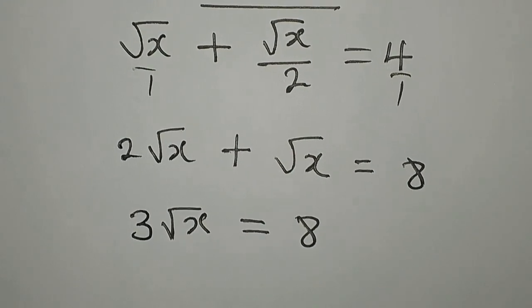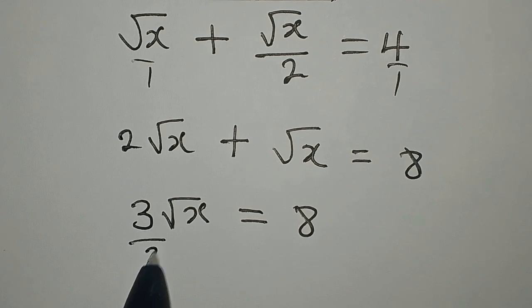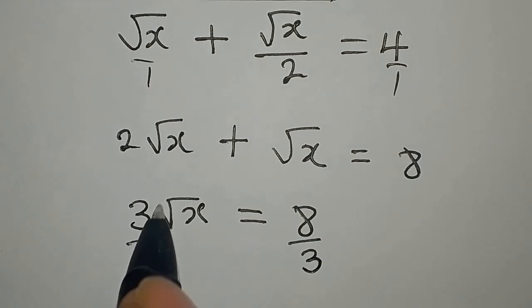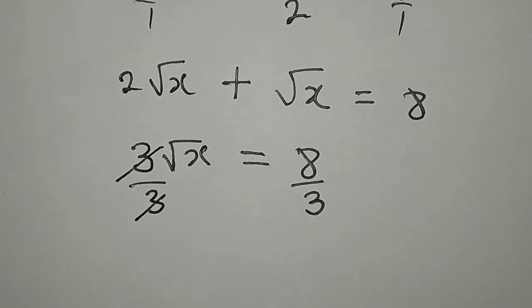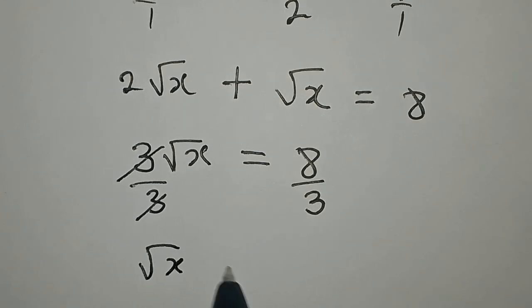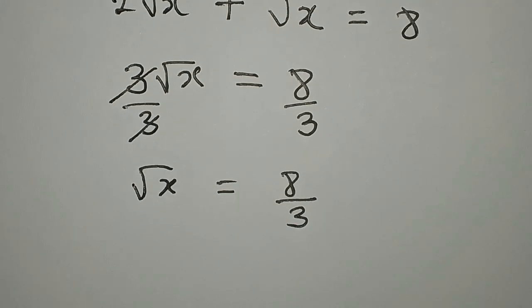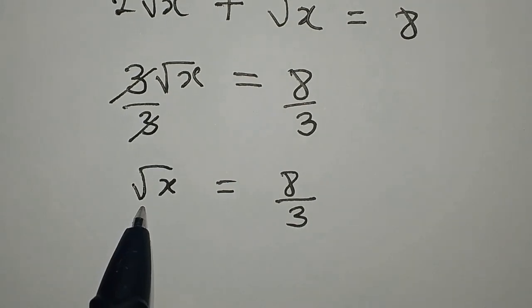Now we are expected to divide this by 3 and divide this by 3 so that this and this can go. Now √x is equal to 8 over 3.